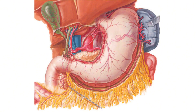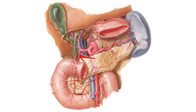Both the right and left hepatic arteries enter the porta hepatis and distribute to supply the right and left parts of the liver, respectively. The gastroduodenal artery is the descending terminal branch of the common hepatic artery. At its beginning, it gives off the supraduodenal artery. Near the upper border of the superior part of the duodenum, it gives off the posterior superior pancreaticoduodenal artery.